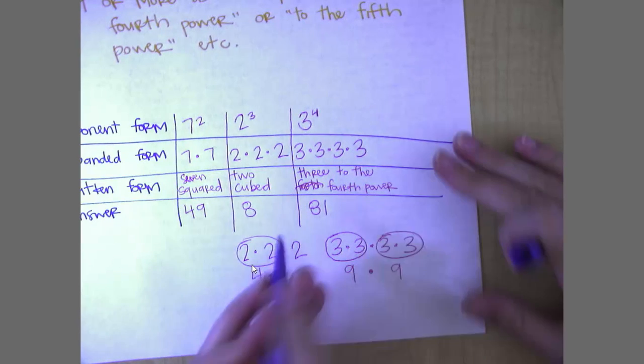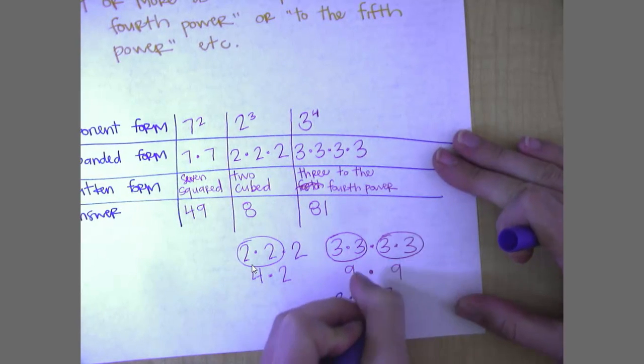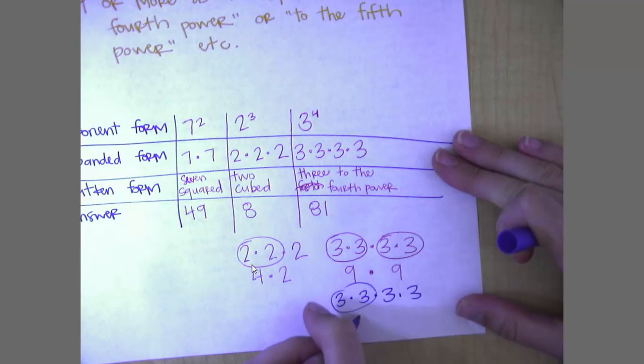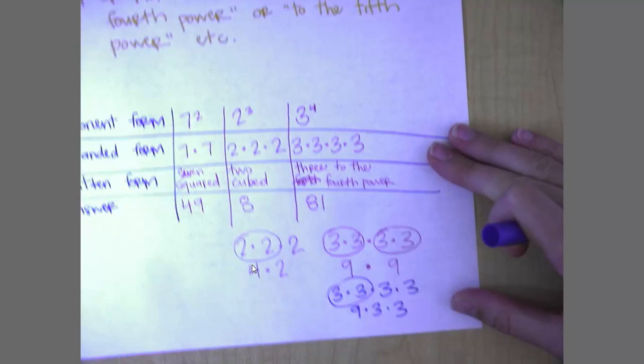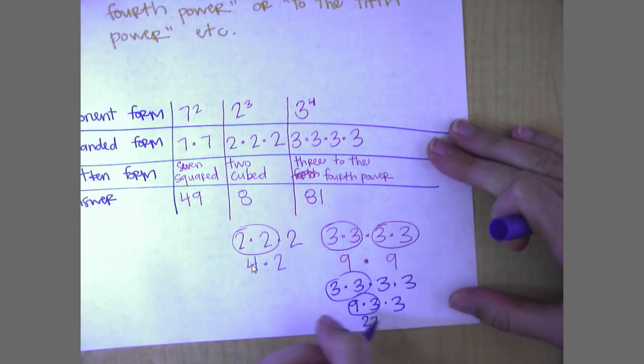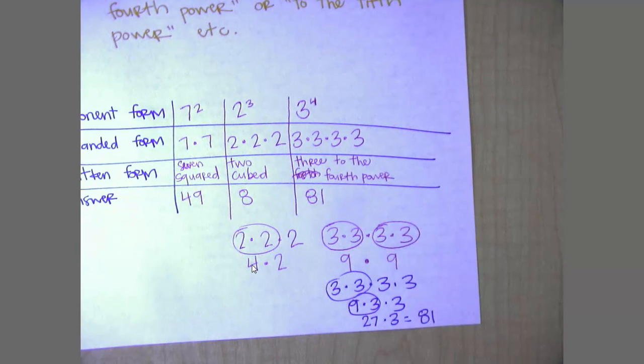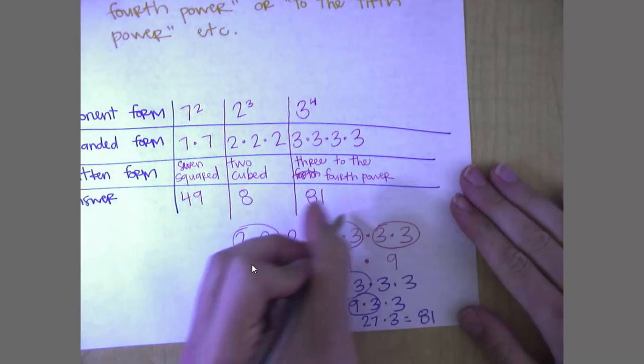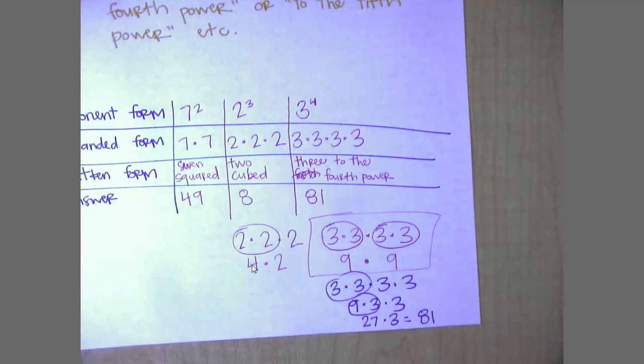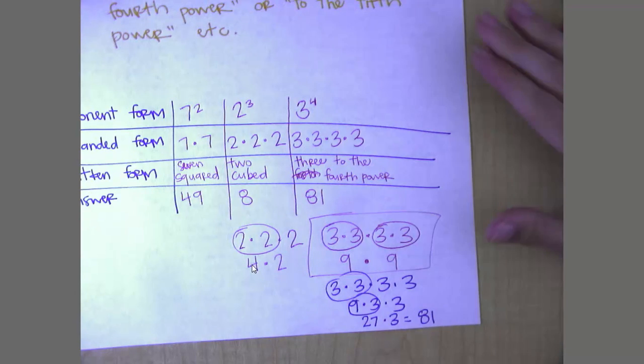Now, could I have done this? 3 times 3 is 9. Then 9 times 3 is 27. And 27 times 3 is 81. Yes. Whichever way works best for you, whichever way makes the most sense in your brain. To me, it's the way in red. I feel like it's less work. But the way in blue may make more sense to you. And that's completely fine. It does not bother me which way you do it.